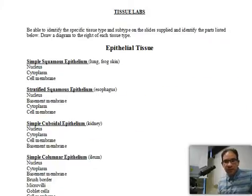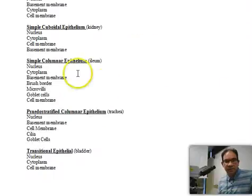Next, we want to take a look at some simple cuboidal epithelial cells. We're going to be looking for the nucleus, cytoplasm, cell membrane, and basement membrane.